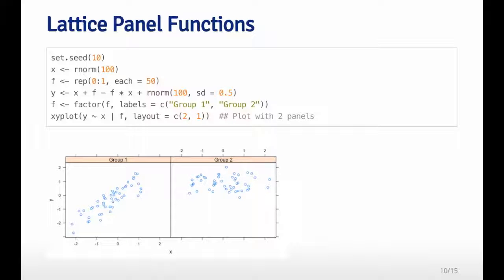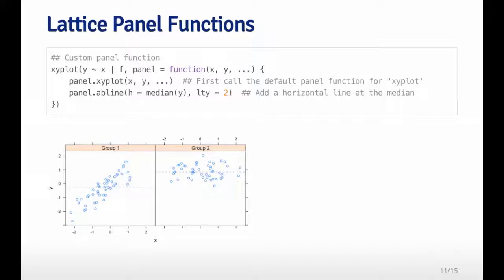Here I've got two panels. In group one it looks like a strong linear relationship, and in group two it looks like there's no relationship. You can see I'm calling a custom panel function via the panel argument, and I give it a function. The first two arguments are x and y.